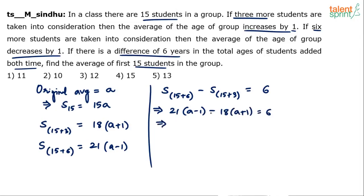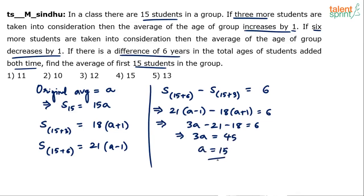Simplifying: 21a minus 18a is 3a, and minus 21 minus 18 gives minus 39. So 3a minus 39 equals 6, which means 3a equals 45, and therefore a equals 15. That's the required answer. The average of the first 15 students was taken as 'a', which came out to be 15. So option 4 is the answer.